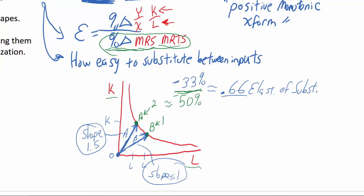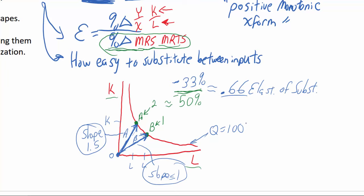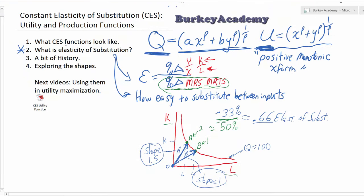This is something that, with production processes, if you have data you can look at — several different observations of how a company has chosen to produce the same output in different ways — you can measure this elasticity of substitution along different points of the curve. This might be an isoquant of Q equals 100. A constant elasticity of substitution function assumes that this elasticity of substitution is constant as you move along any two points on any indifference curve.